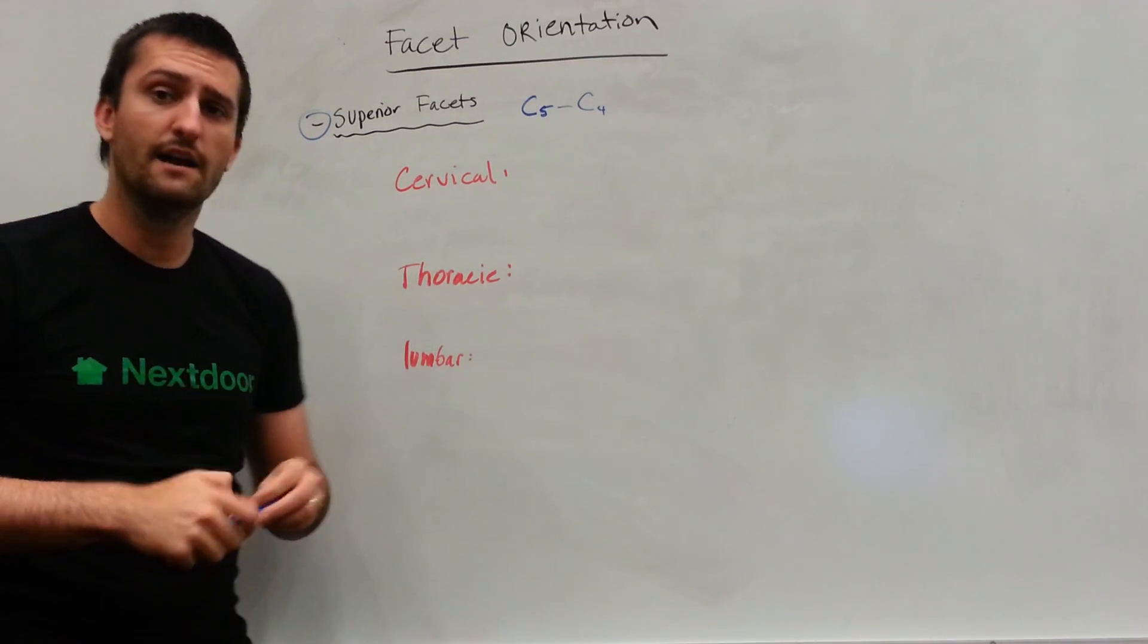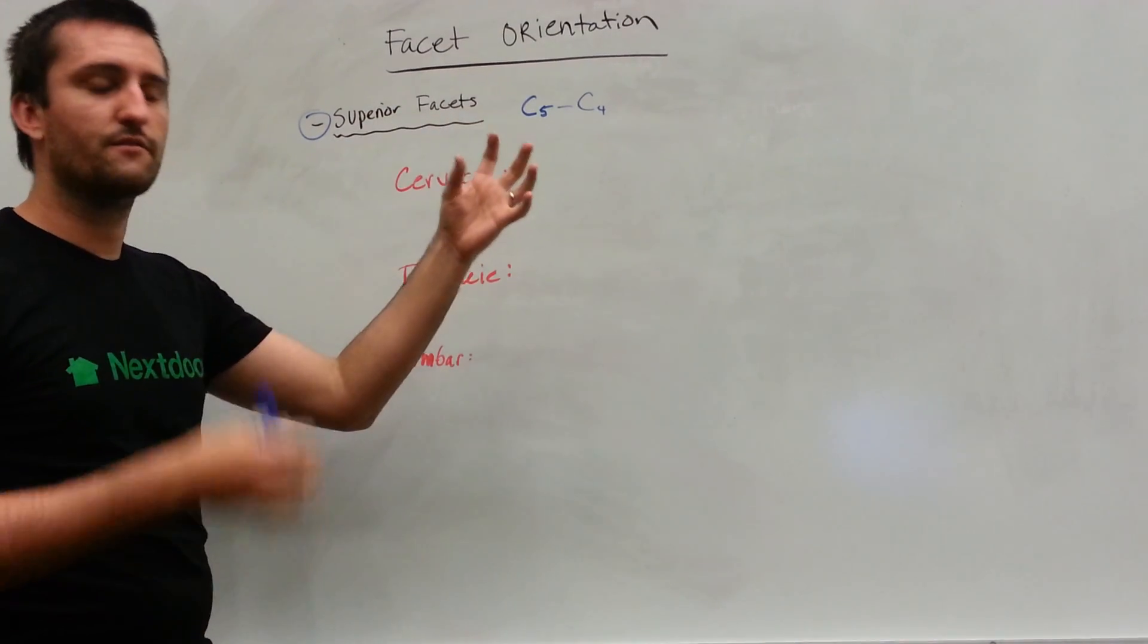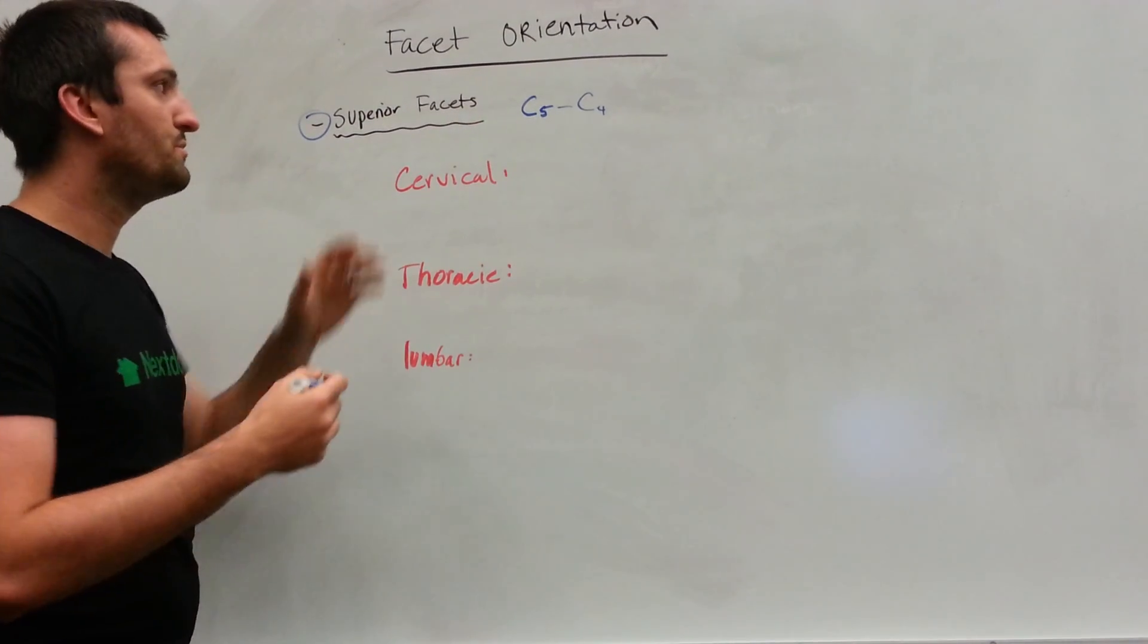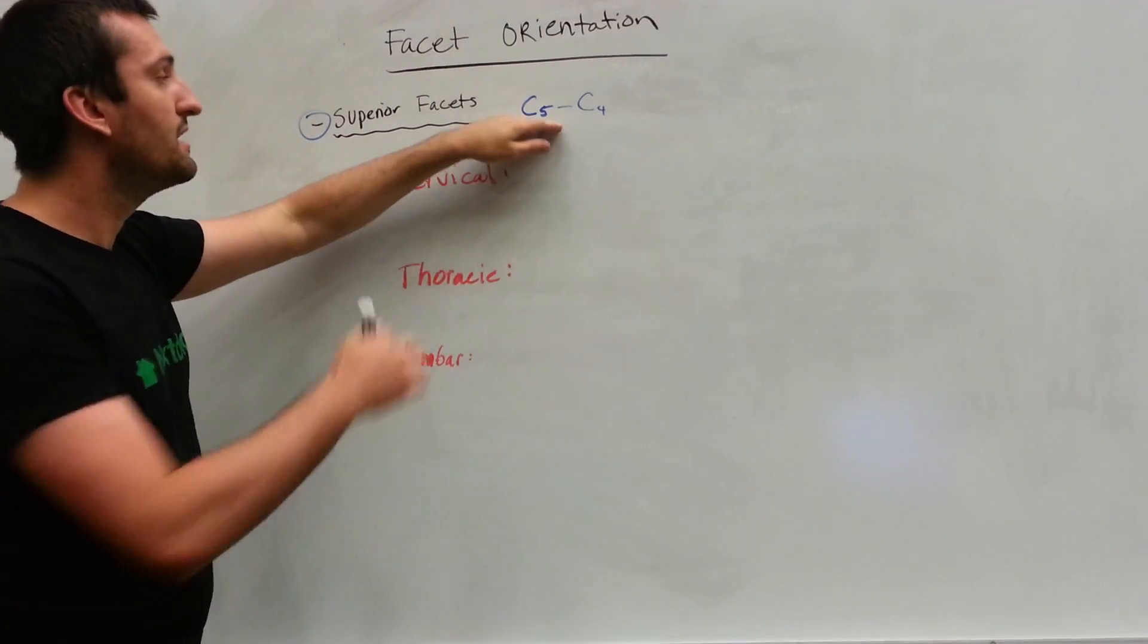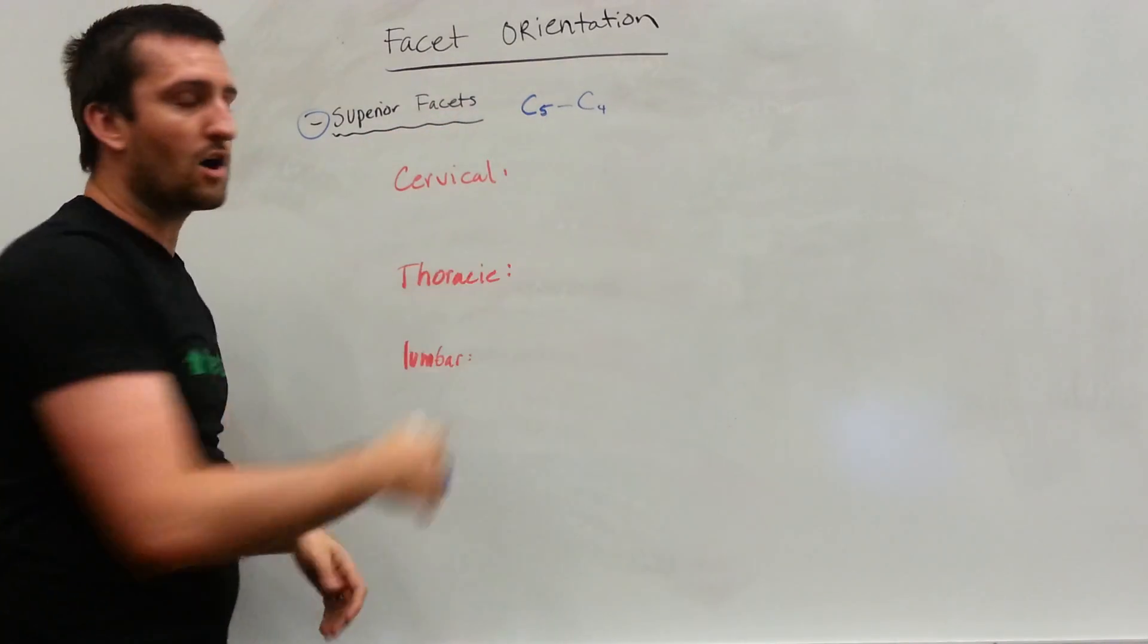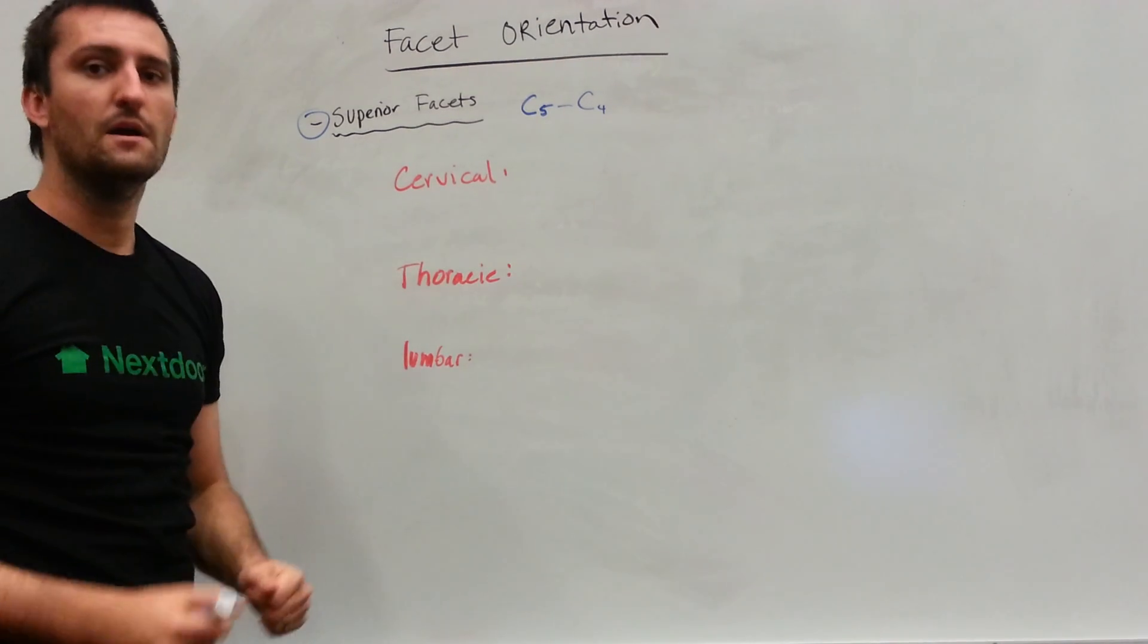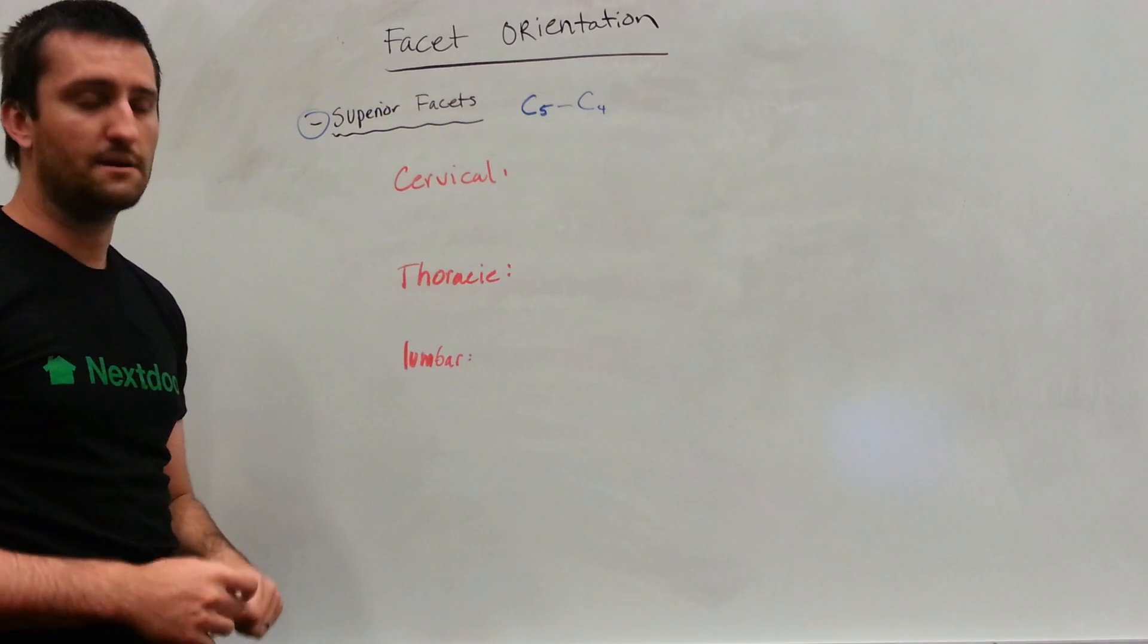Hopefully that makes sense. If not, just Wikipedia it and you'll get a good idea of what the superior versus the inferior facet looks like. The superior facet of C5 and the inferior facet of C5 are met in the middle by the pars interarticularis, and that can be the Scotty dog fracture. I'll talk about that later, but that's another high yield subject.